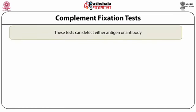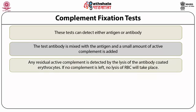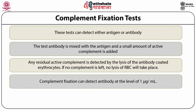Complement fixation tests can detect either antigen or antibody. The test antibody is mixed with the antigen and a small amount of active complement is added. The immune complex activates the classical pathway of the complement and fixes the complement. Any residual active complement is detected by the lysis of the antibody coated erythrocytes. If no complement is left, no lysis of RBC will take place. In practice, a quantity of complement is added which is just enough to lyse the RBC. Even a small amount of test antibody forms the corresponding immune complex and fixes a significant percentage of the complement. Complement fixation can detect antibody at the level of 1 microgram per mm.